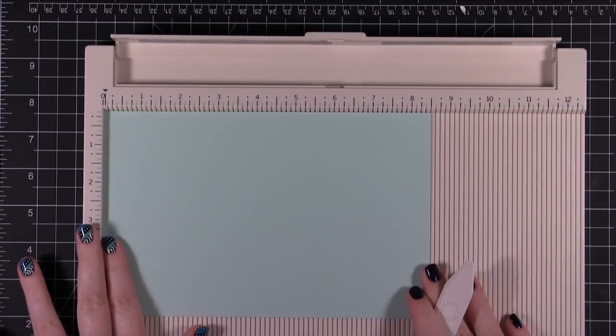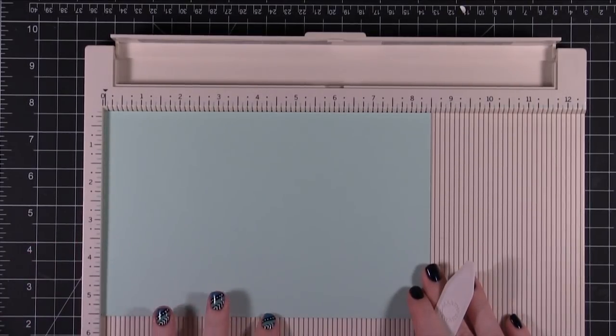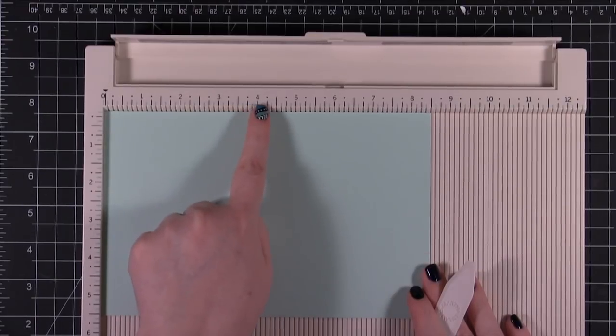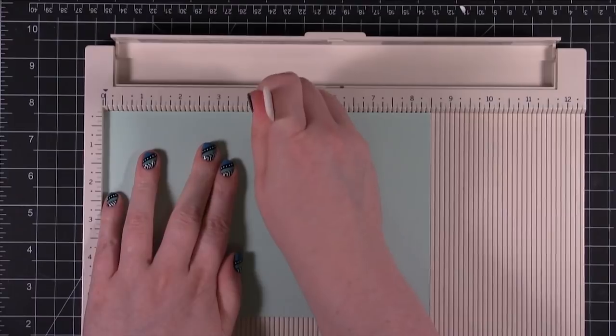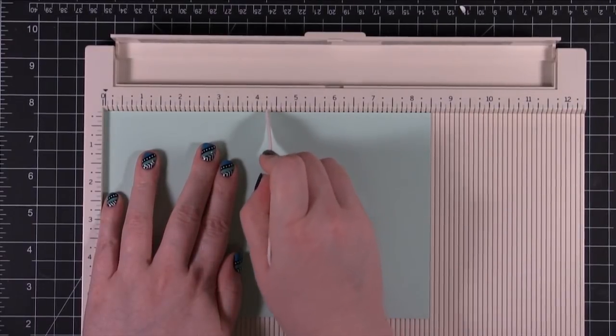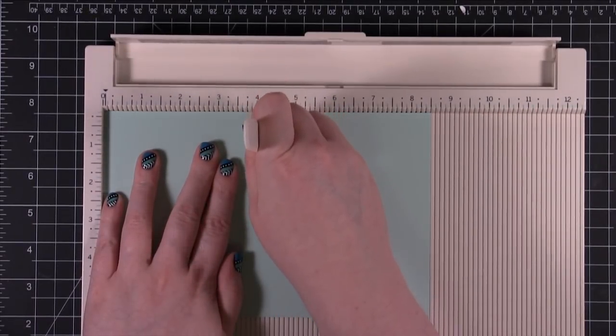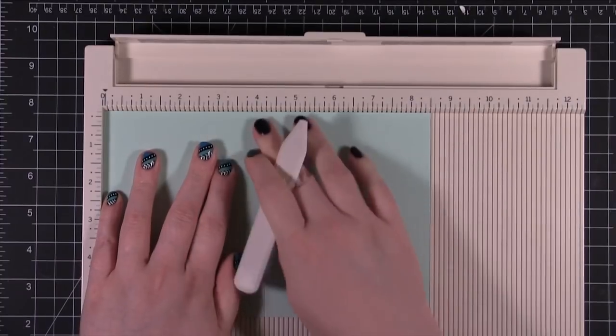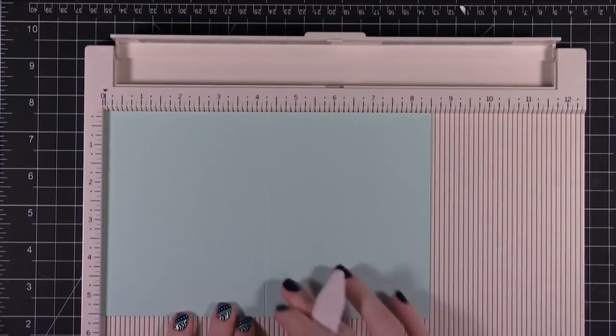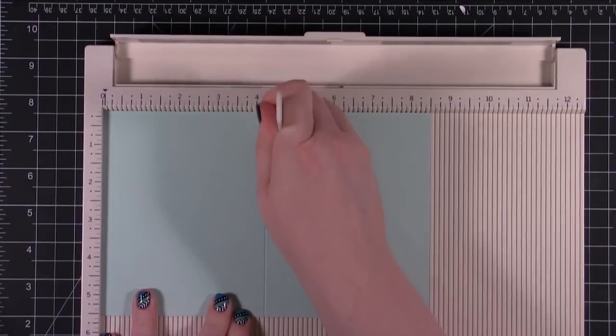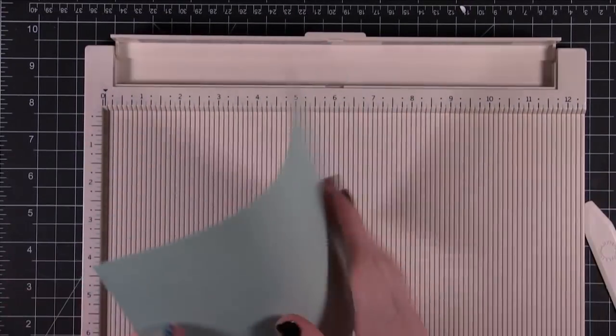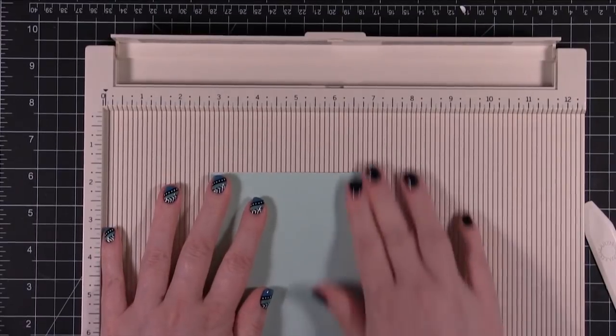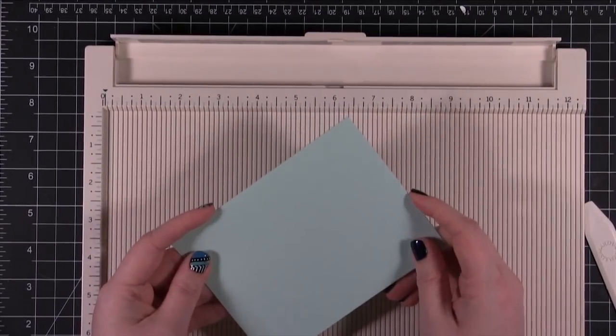Since this card stock is 8.5 wide, this is going to be a standard size card so I would score it at 4.25. So 4 and then just 1 quarter over. You just kind of feel for where that groove is and then follow it down. You might have to practice a little bit but once you have it it's super easy. You just feel for the groove and then it's super easy to score that card stock into a perfect sized card.